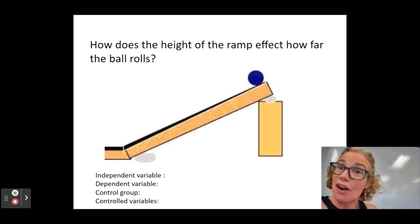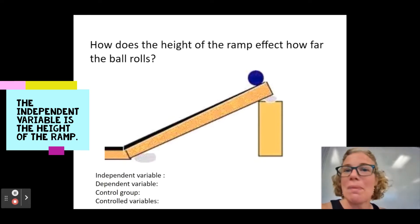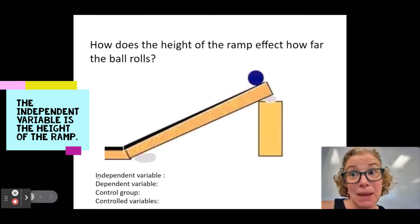So how far it's rolling cannot be the independent variable that I, the scientist, am changing. Right? Because it's just silly. So therefore, what am I changing? I, the scientist, am going to change the height. So that means the height must be the independent variable.